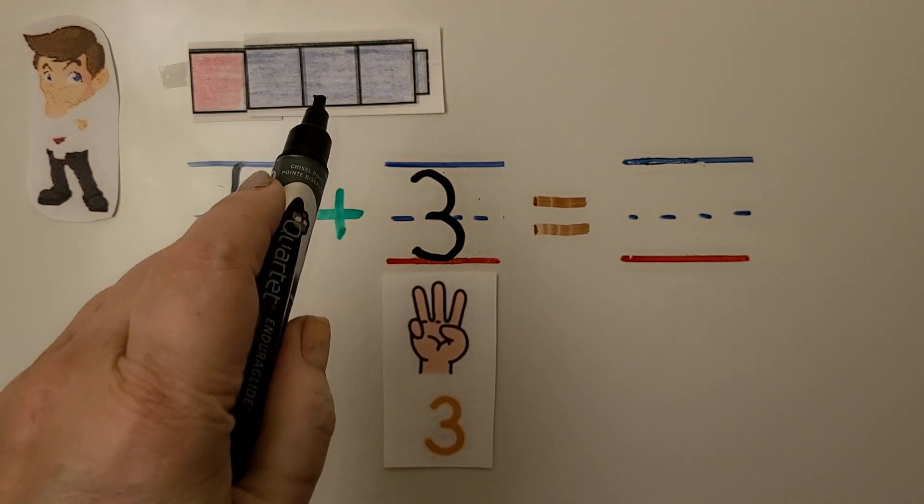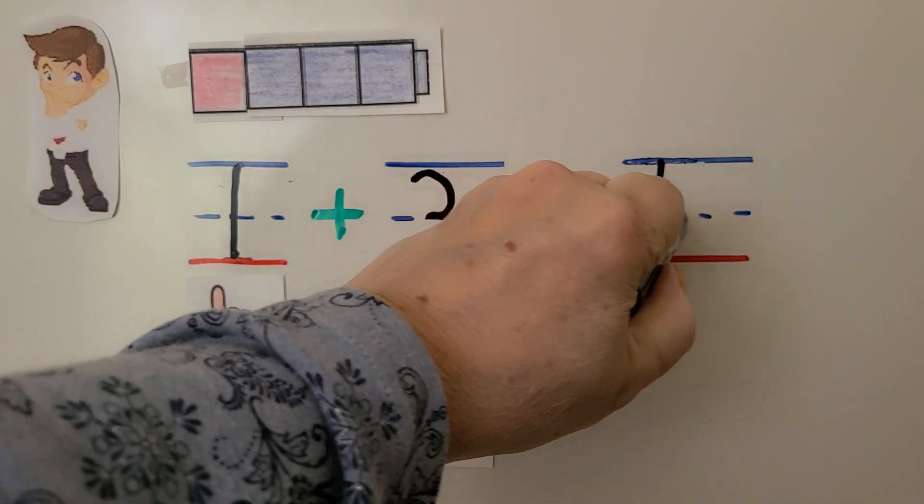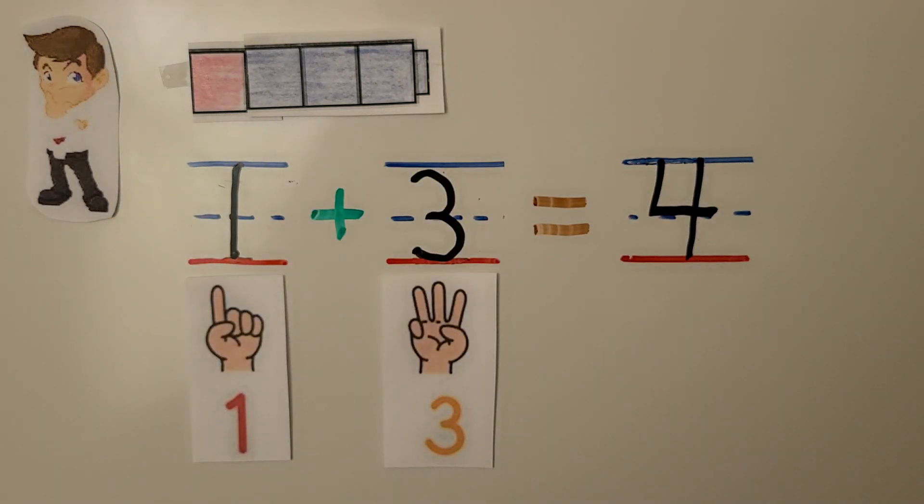One, two, three, four. We can write the four. One plus three is equal to four. Sam has four cubes.